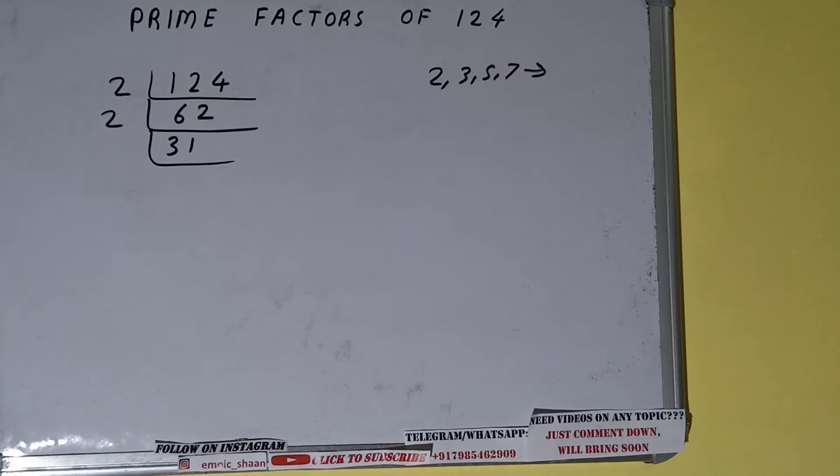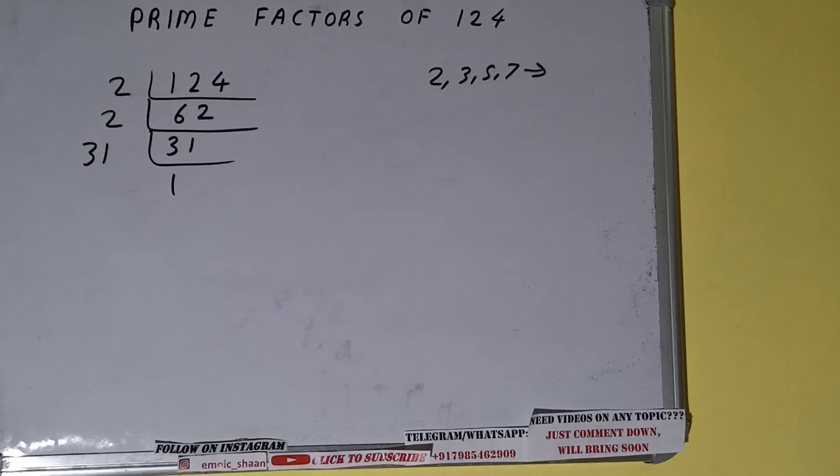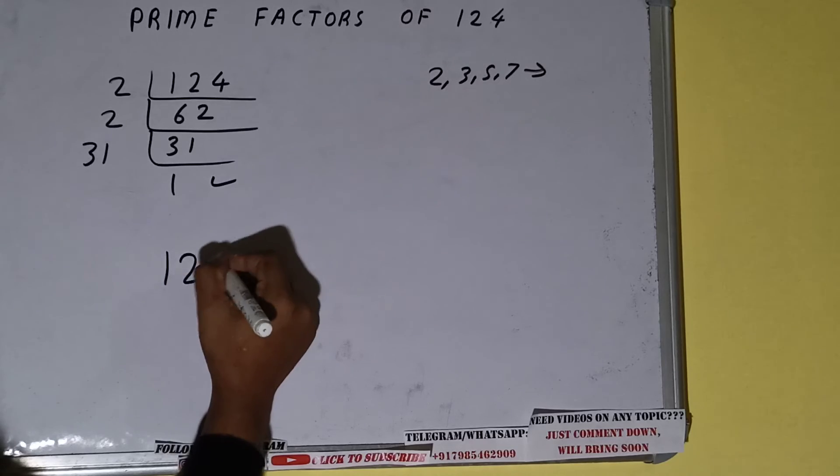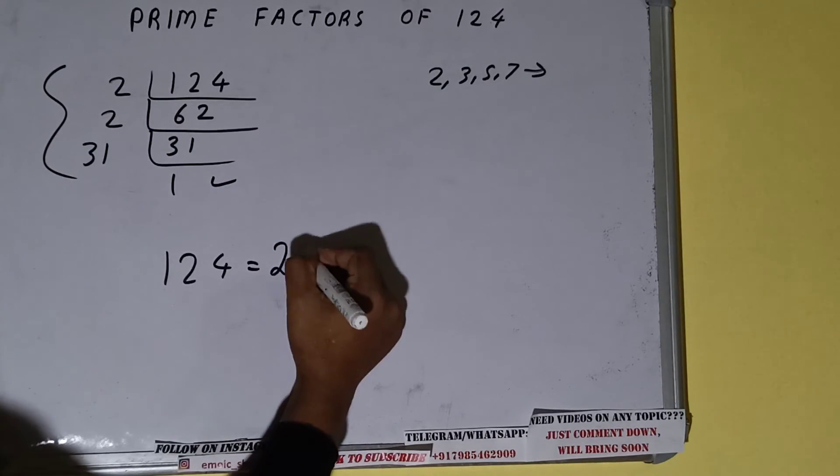Once we do so, we'll be getting one. Once we get one, we need to stop and do one last thing, that is the prime factors of 124 will be whatever we have on the left-hand side, that is 2 times 2 times 31. That would be the answer.